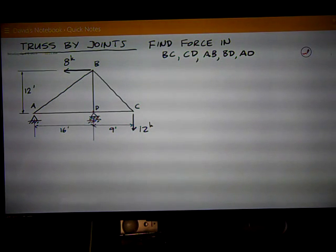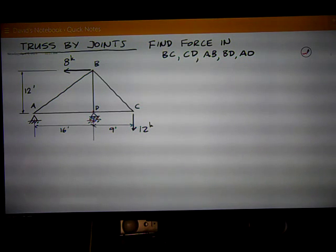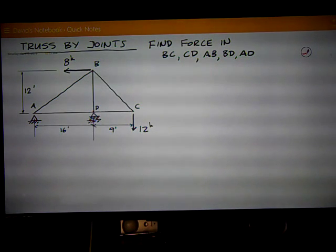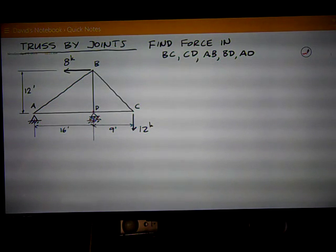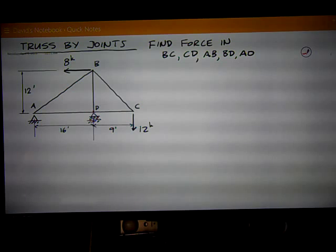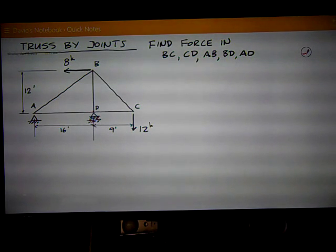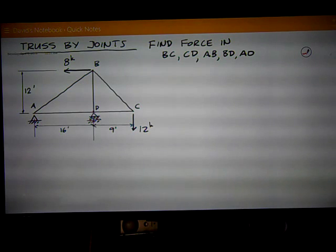We've got a five-member truss with those two 8-kip and 12-kip loads at points B and C. And the goal is to find the force in all five of those members. So, the first step in these truss problems is to solve for the reactions, if you can. And you always can with these determinate trusses.